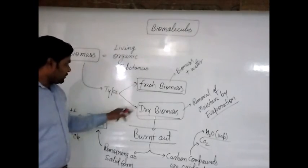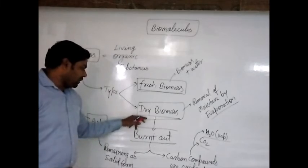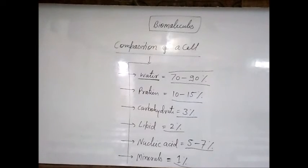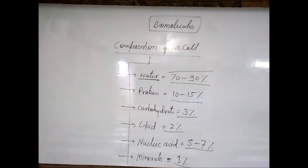So remember: biomass is of two types — fresh and dry — and when we burn dry biomass, we get gaseous products and ash. Now, you can see the different composition of compounds present in a living cell: water is 70-90%, protein is 10-15%, carbohydrate is 3%, lipid is 2%, nucleic acid is 5-7%, and minerals are 1%. Water content may vary depending on the material — for example, wood has less water, while a fresh leaf has more.